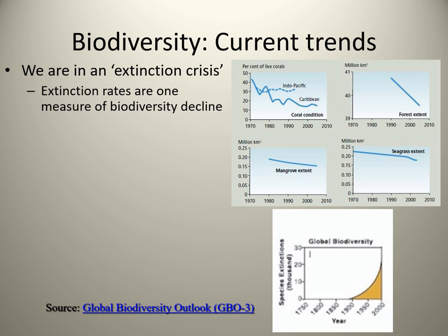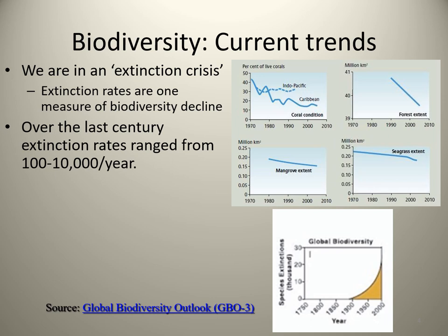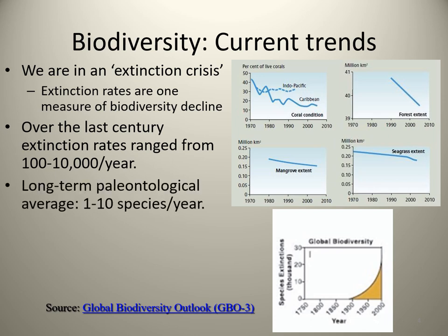It's concerning that we're in a current extinction crisis similar to the dinosaurs' extinction. Over the past hundred years, extinction rates have ranged from 100 to 10,000 times the typical rate per year seen from a long-term perspective. The average extinction rate on Earth before human existence was one to ten species per year from the paleontological record. Now that rate is 100 to 10,000 times higher. A graph shows an exponential increase in species extinction rates from 1750 up to 2000, with up to 20,000 extinctions per year.